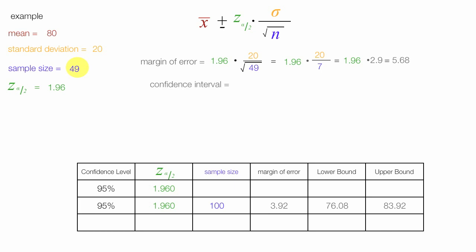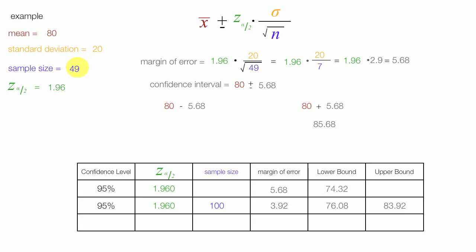The confidence interval is equal to 80, which is the mean, plus or minus the margin of error of 5.68. The lower bound is 80 minus 5.68, which is 74.32. The upper bound is 80 plus 5.68, which is 85.68. So for sample size 49: margin of error is 5.68, lower bound 74.32, upper bound 85.68.